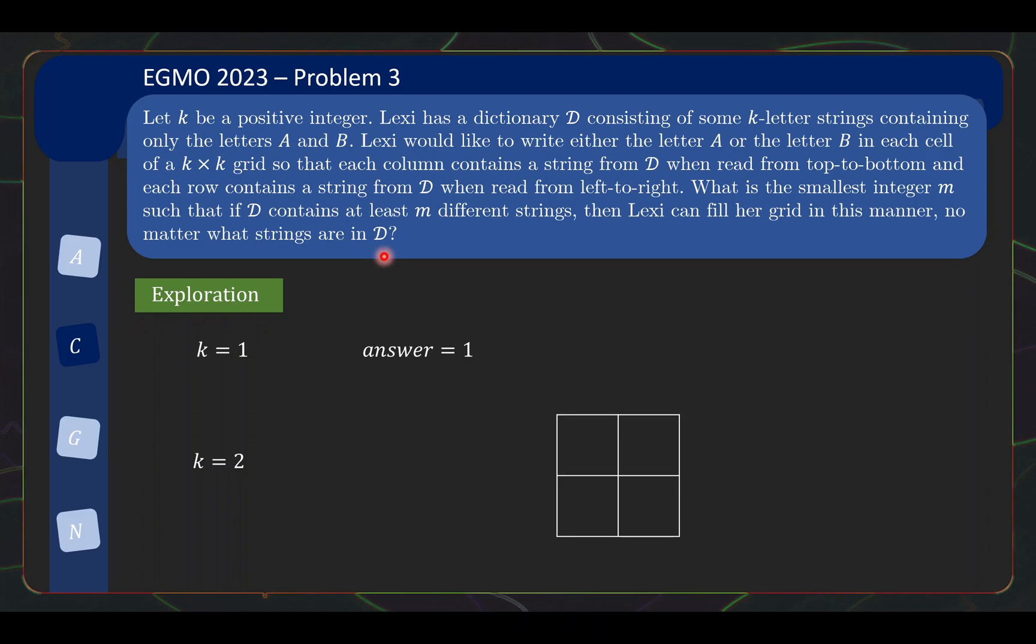Now k equals 2 gives slightly more insight. In this case we have 4 options: AB, BA, AA, and BB. If AA is in the dictionary, we can just write the whole grid with A's. Similarly, if BB is in the dictionary, we can use B's for the entire grid. So if we want to make our life difficult, we shouldn't have all A's or all B's in the dictionary.